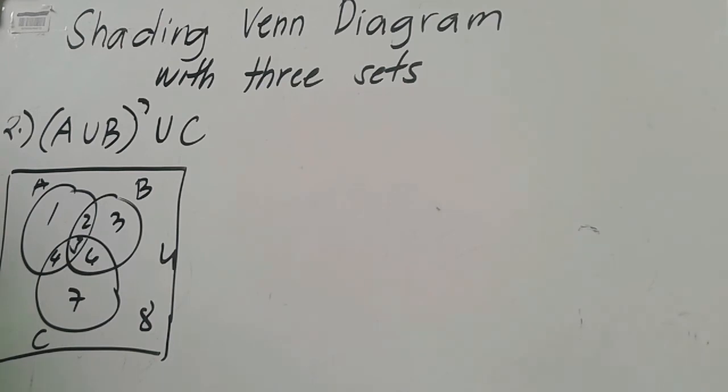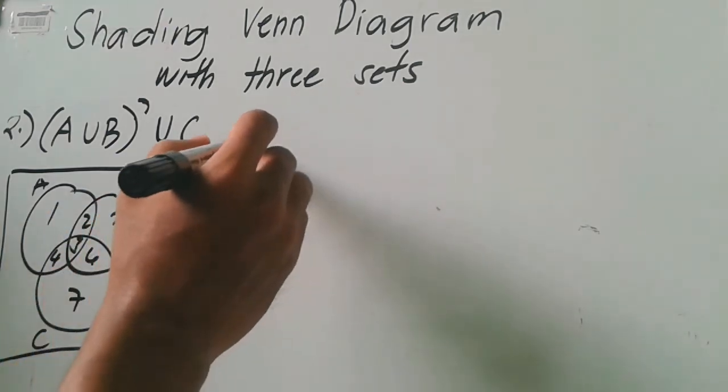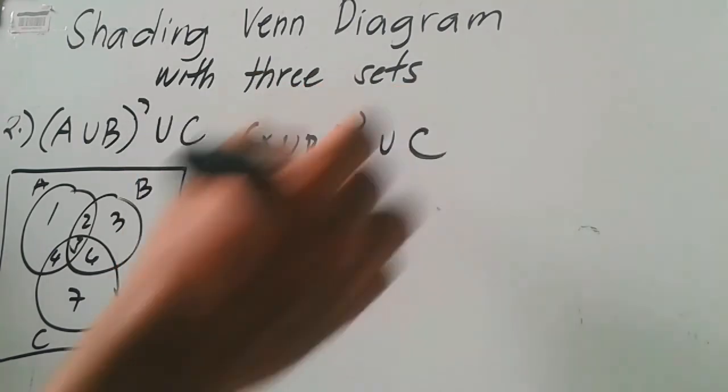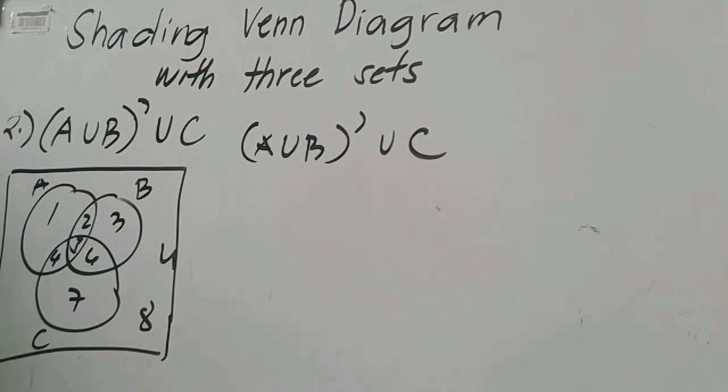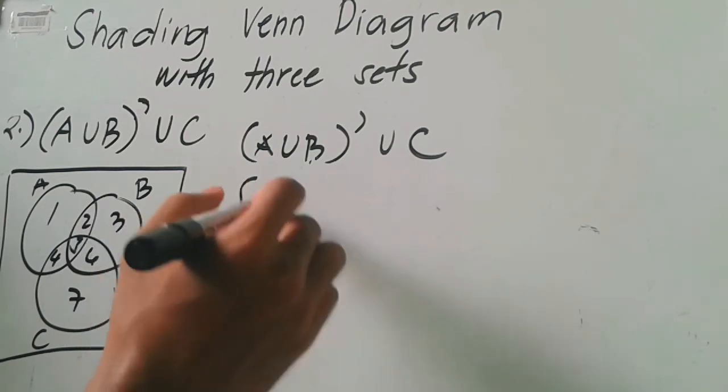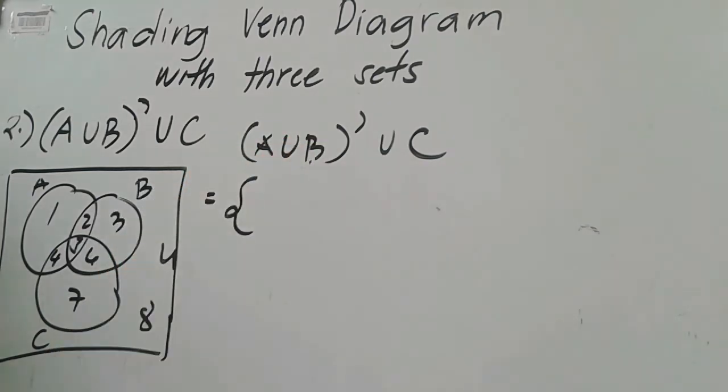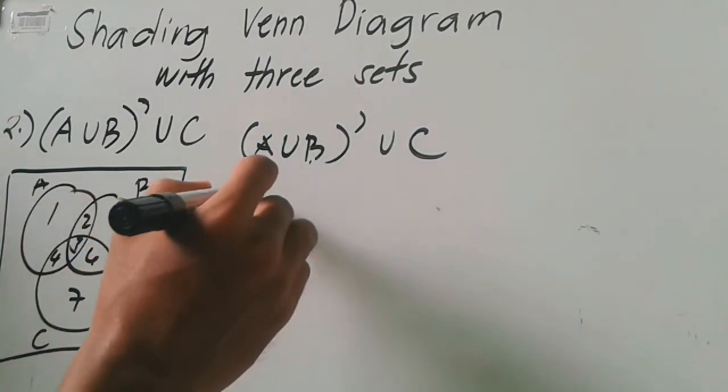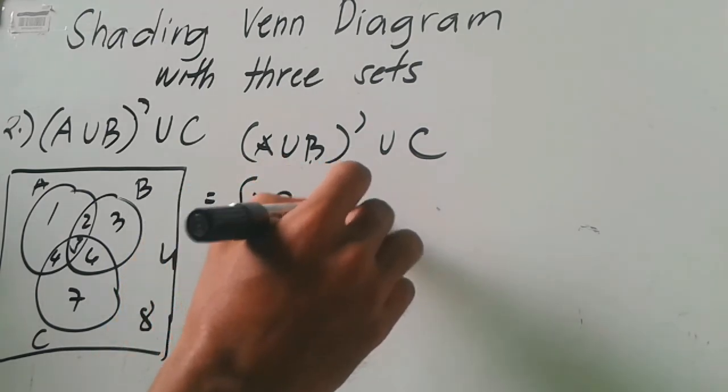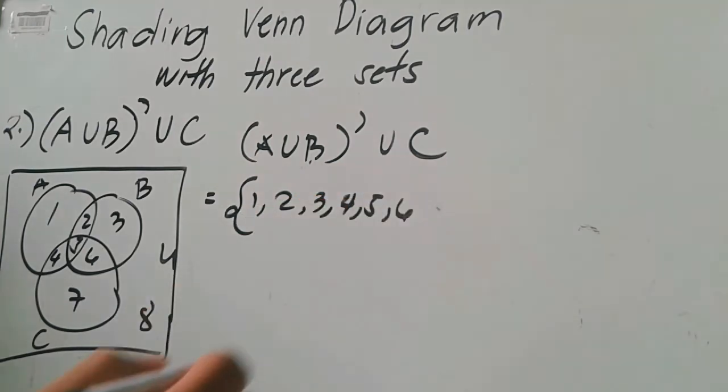Okay, next. So mas madali. Another example. So quantity, so quantity A union B complement union C. A union B complement and then union C.